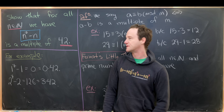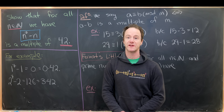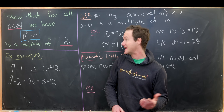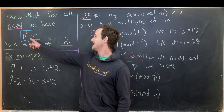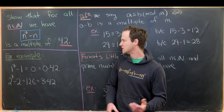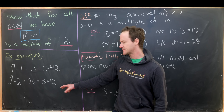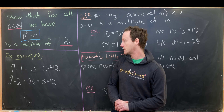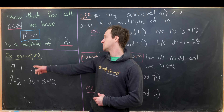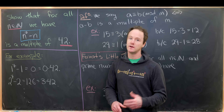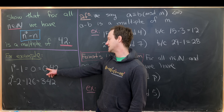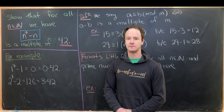Here I've got a nice number theory problem which involves the famous number 42. Our goal is to show that for all natural numbers n, we have n to the 7 minus n is a multiple of 42. So let's look at a couple of examples. We have 1 to the 7 minus 1. That's clearly equal to 0. But 0 is definitely a multiple of 42 — it is 0 times 42.